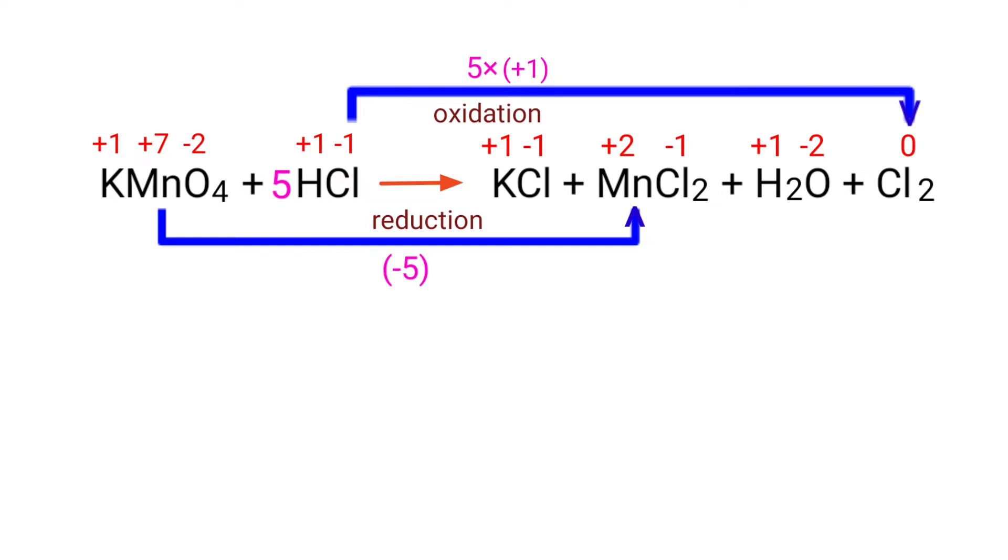Now you can write the equation as KMnO4 plus 5HCl gives us KCl plus MnCl2 plus H2O plus Cl2.